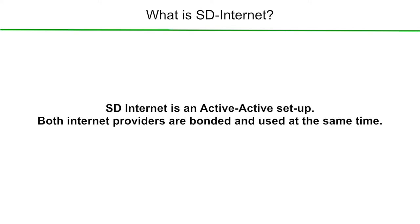SD Internet, like SD-WAN, is using what we call an active-active setup. What it means is that both internet providers are bonded together and used at the same time on the SD device, which is usually a firewall — it could be a router as well. They're both bonded together and we're utilizing both connections at the same time.